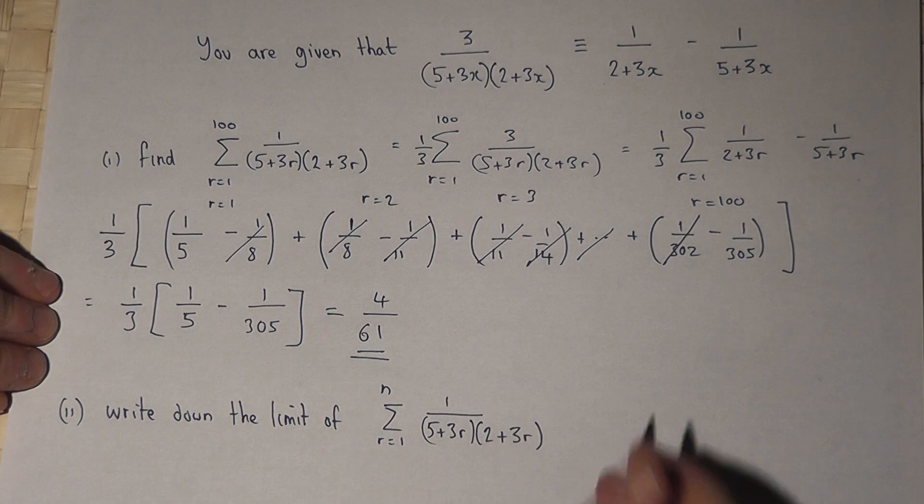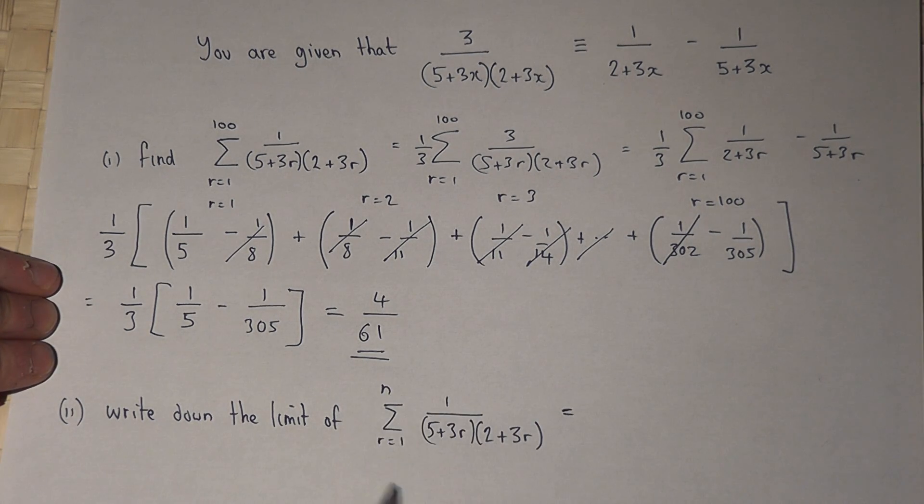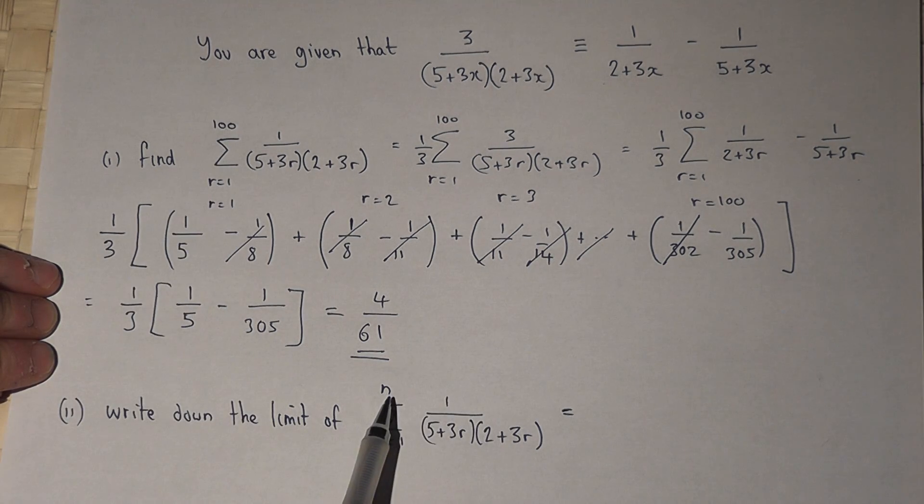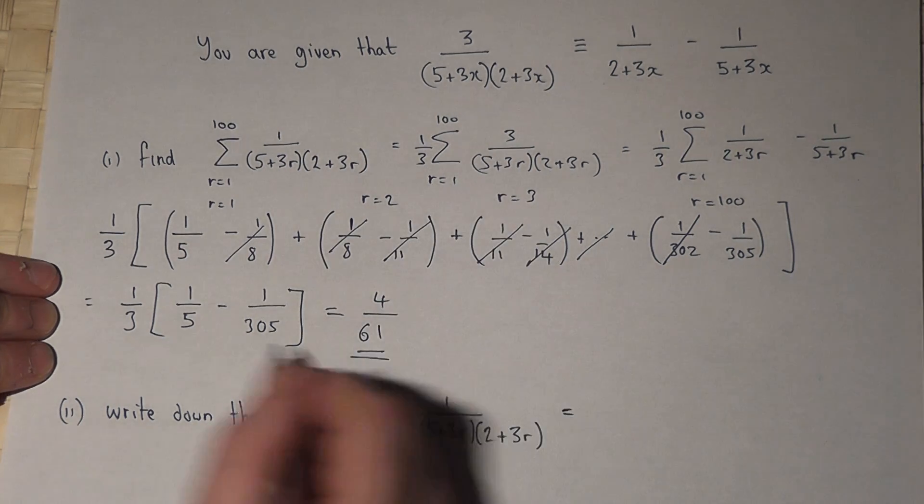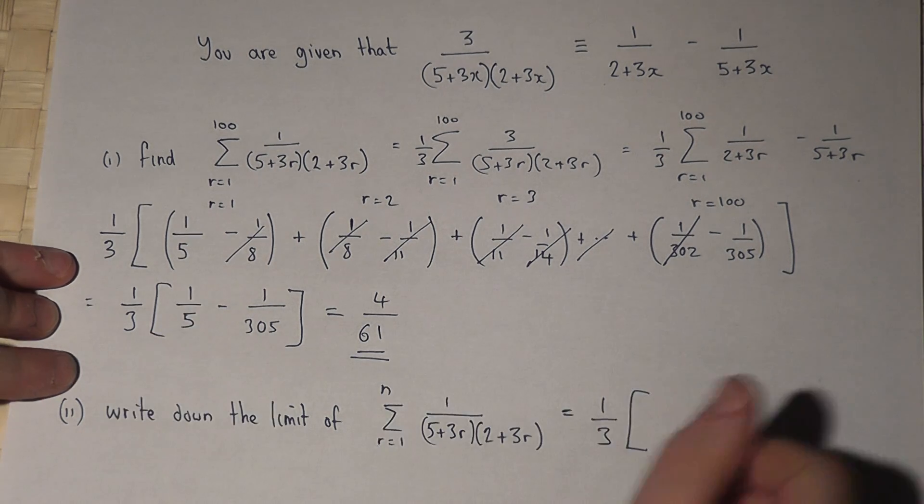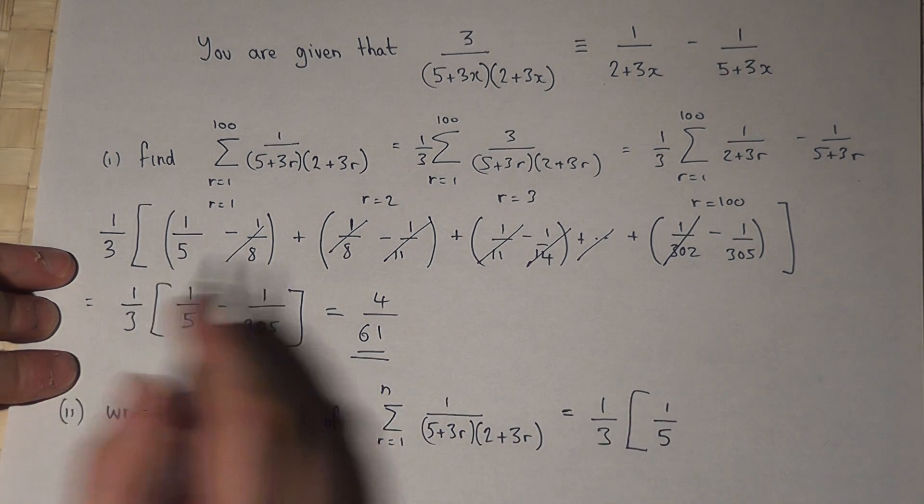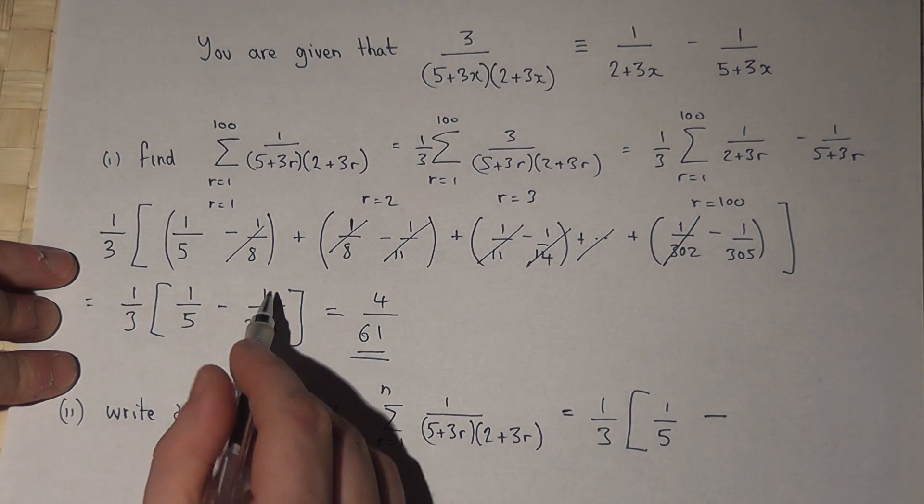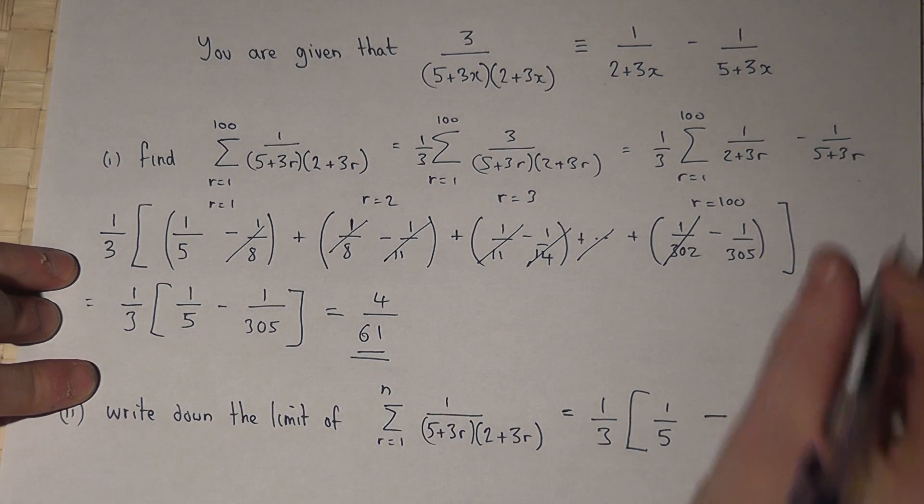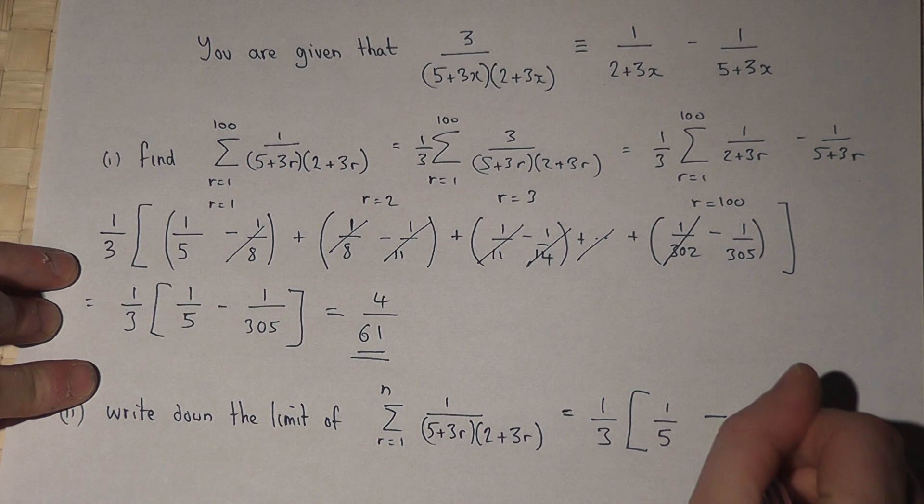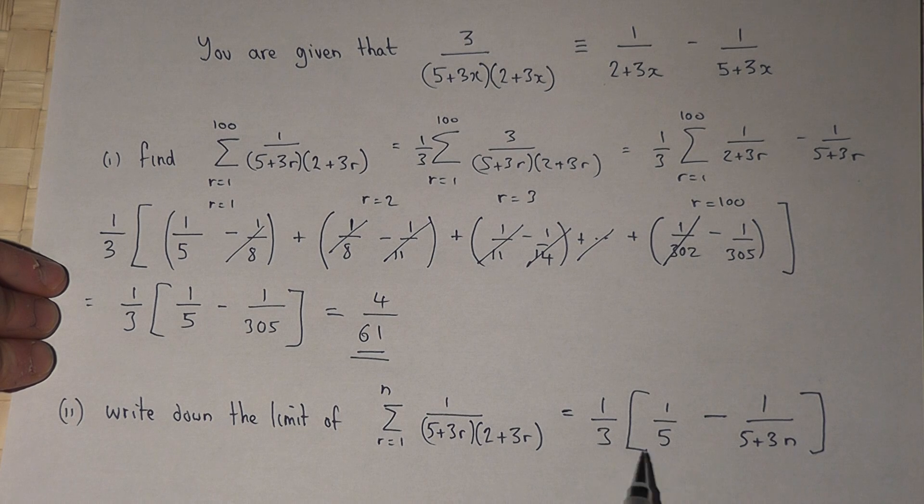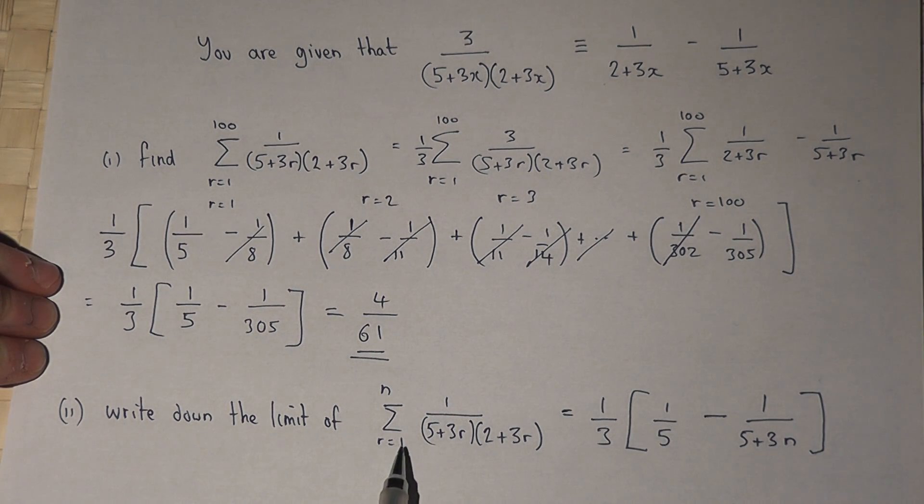Now we can generalize this, because if we look at this expression here, it's the same as this, but rather than r is 100, we have r equals n at the end. So there'll be 1 third, there'll be 1 over 5, that was the very first when we worked it out, but take away rather than 1 over 305, the very last term will be 1 over 5 plus 3n. So this would be a general expression for the sum from r equals 1 up to n.